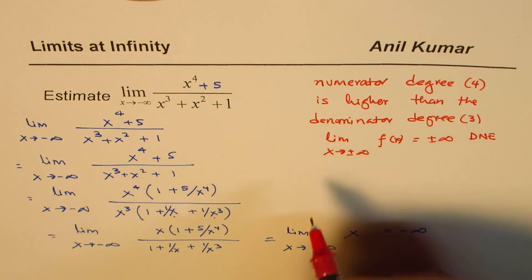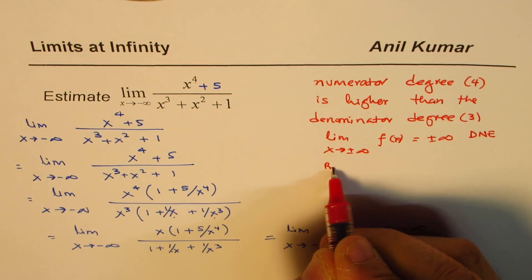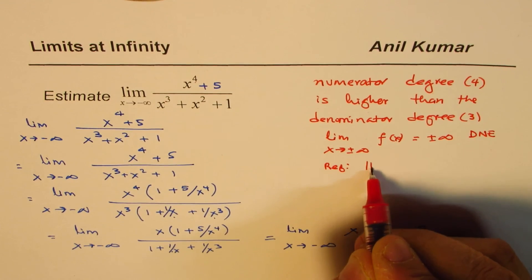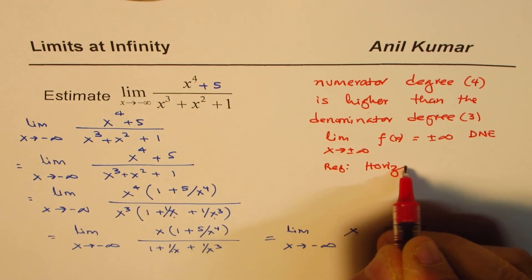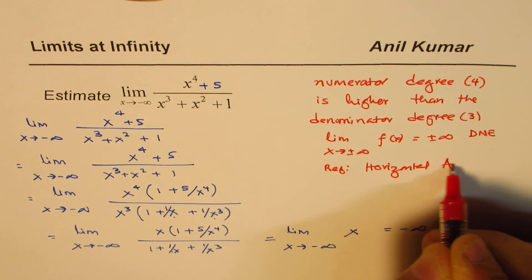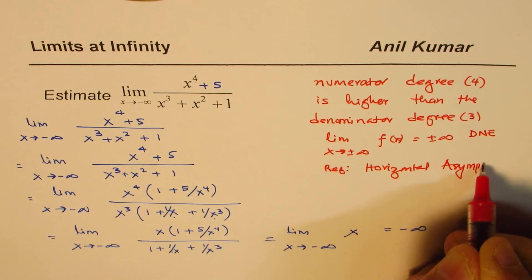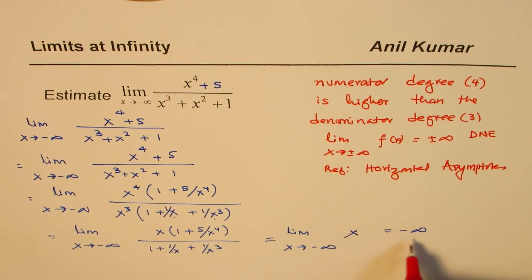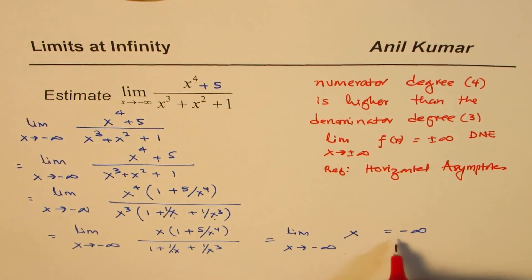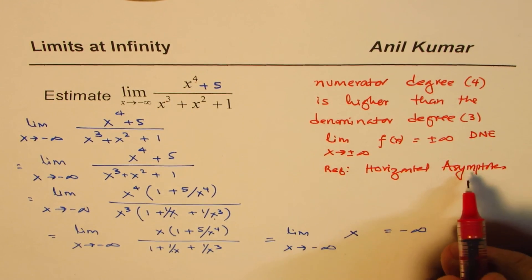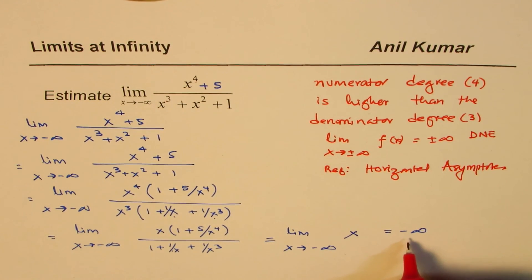At times when you are working with horizontal asymptotes, this is a reference to horizontal asymptotes. You will find that there is no horizontal asymptotes. So horizontal asymptotes will not exist for this condition, as the function is not approaching a fixed value.